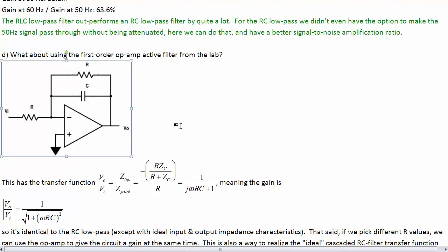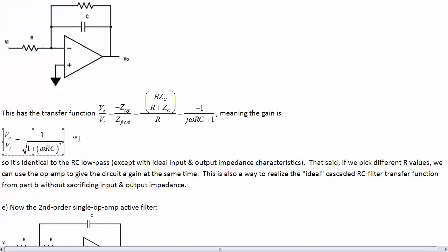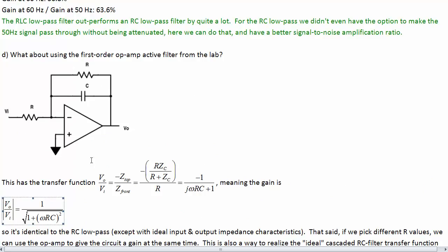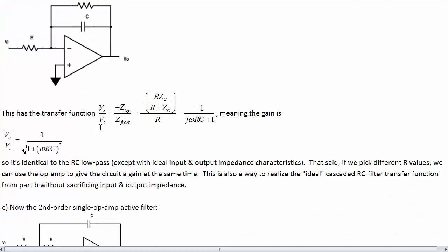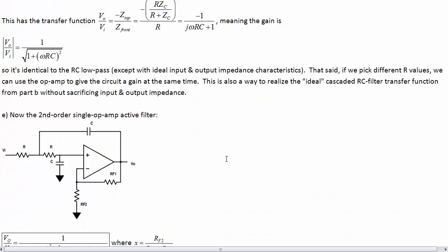This op-amp has exactly the same transfer function as the RC filter. So, the only real advantage that it, well, besides being inverting. So, it does some different things with phase. But the big advantage of this is that it has great impedance characteristics. So, if we cascade a couple of these together, then we get the ideal RC filter behavior. Although we did need a lot more components to build it, like we needed this op-amp. So, we've got some active stuff going on.